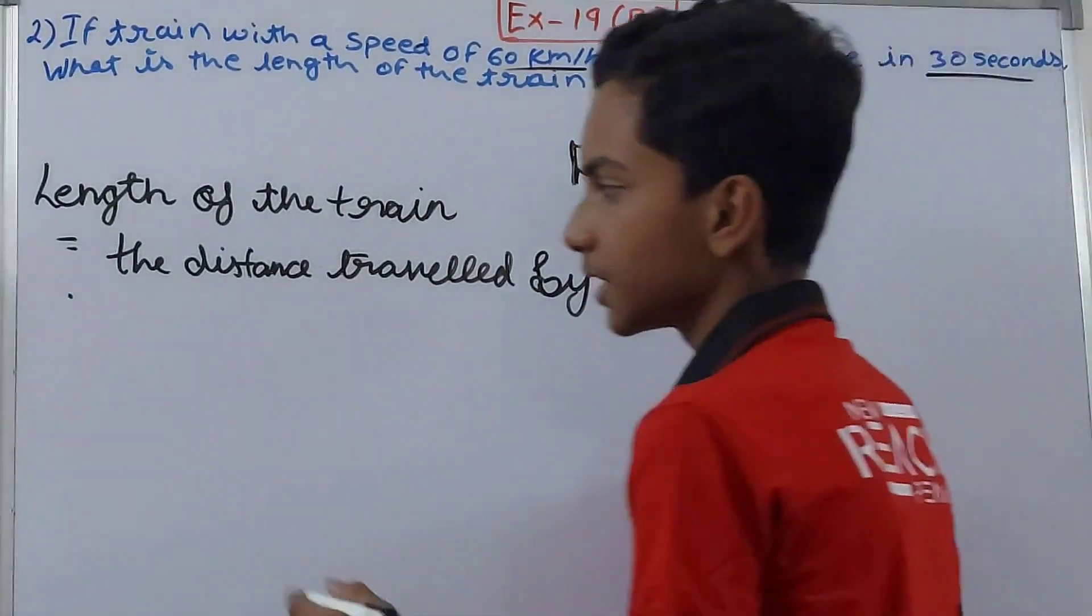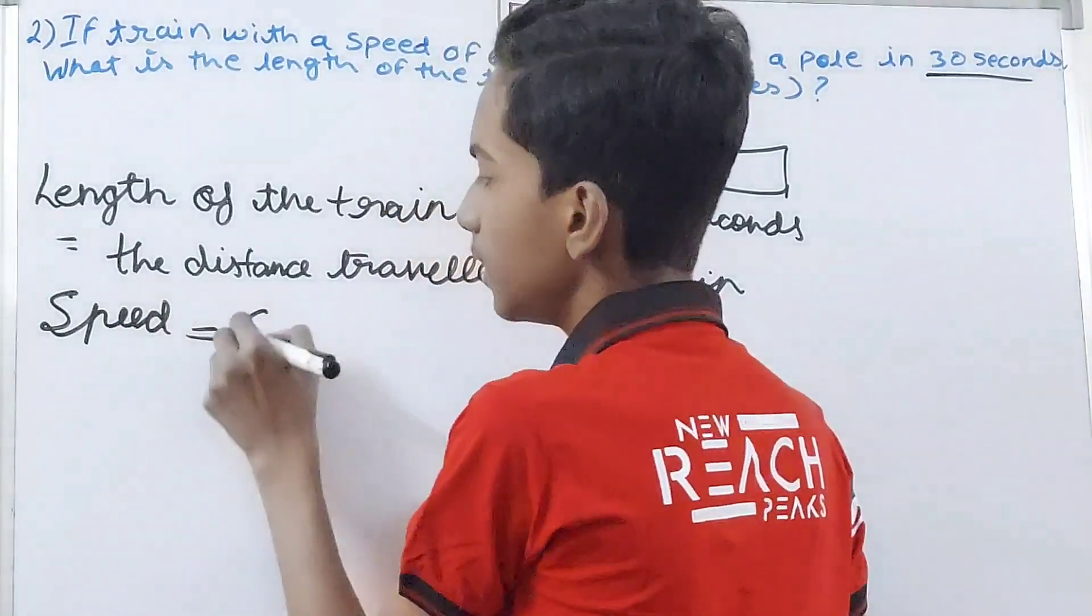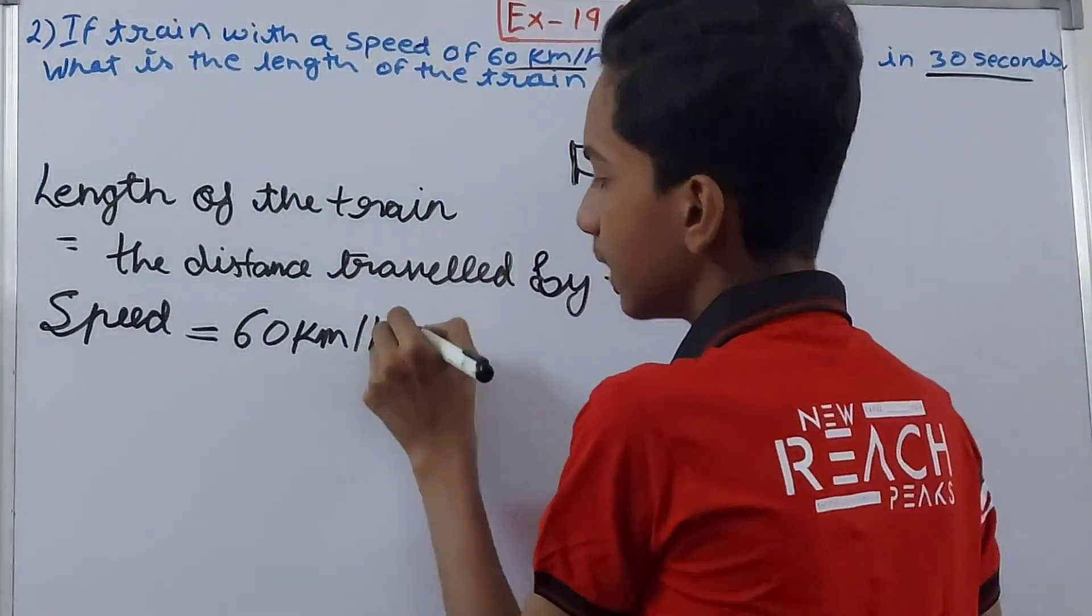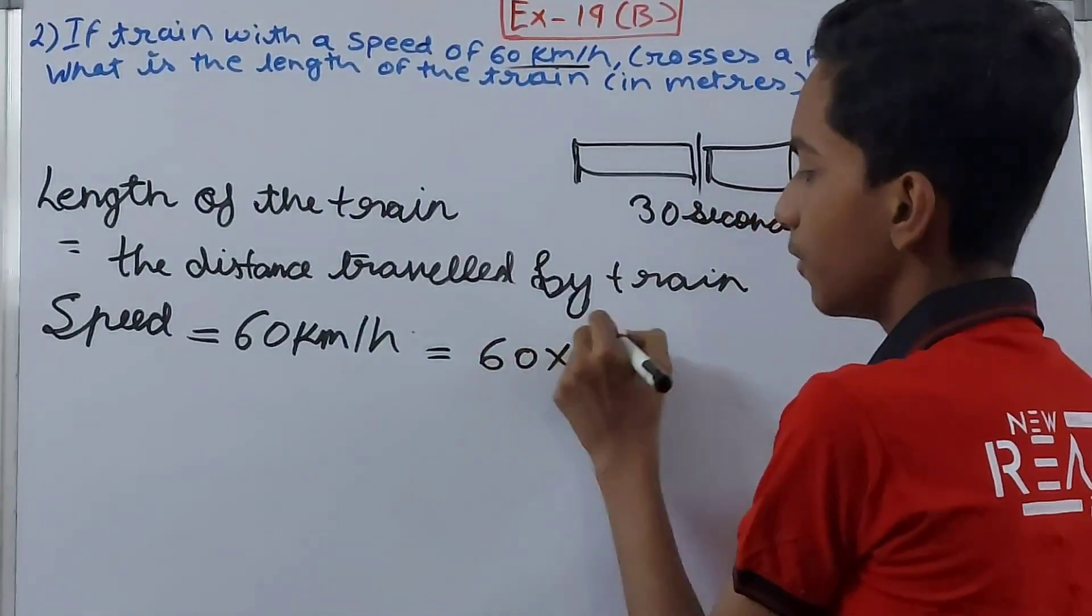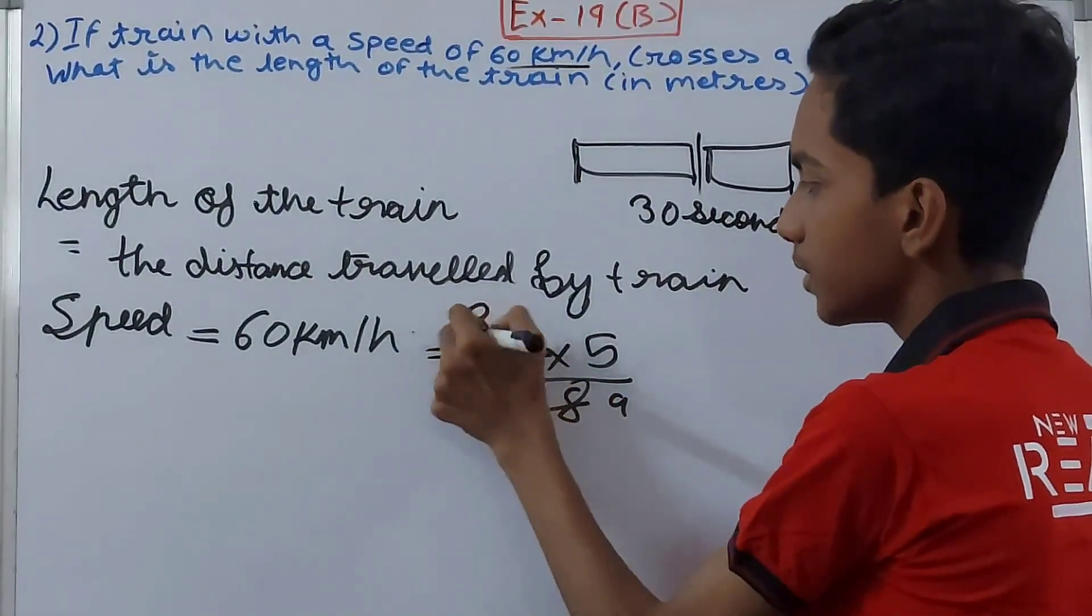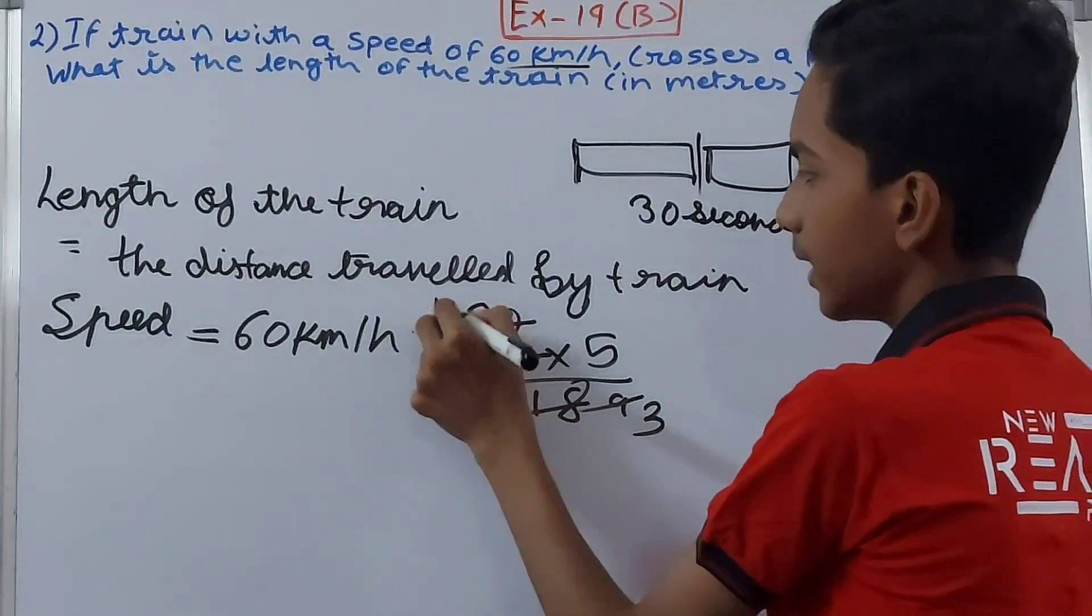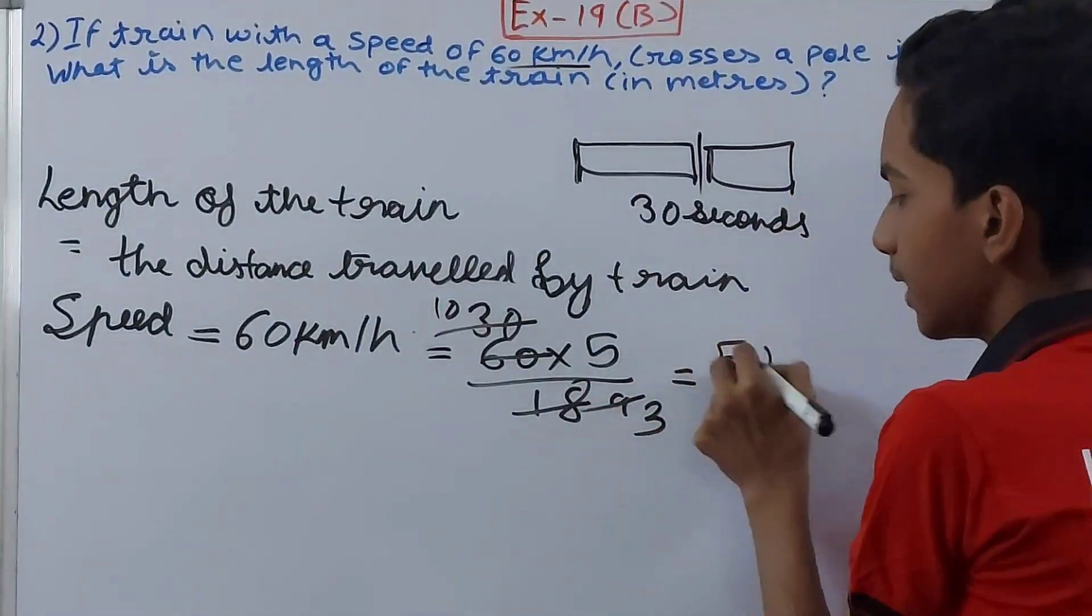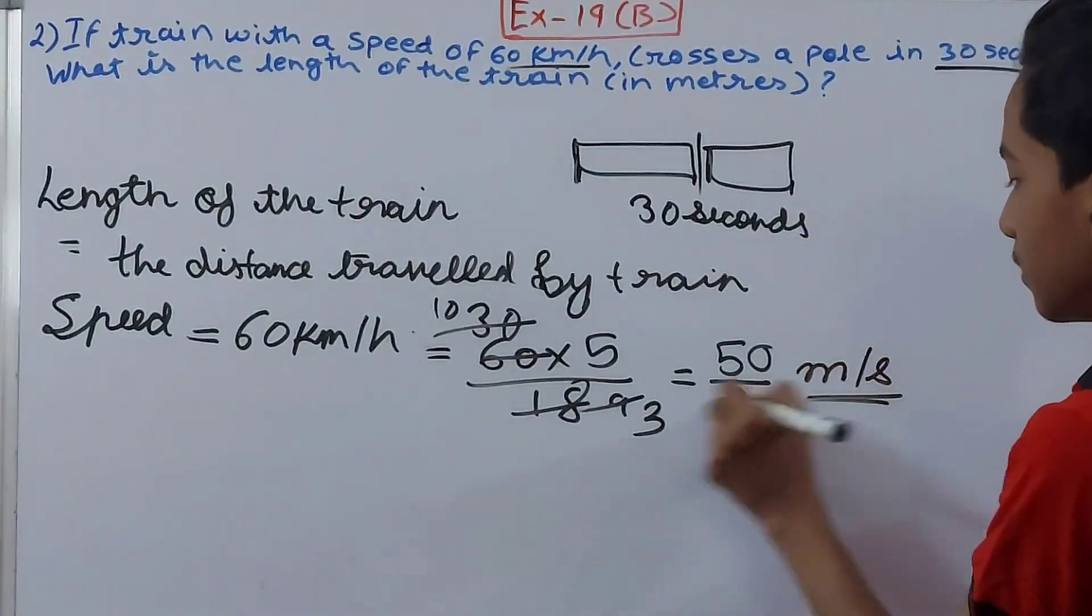So the speed is 60 kilometers per hour and that will be converted to meters per second. So 60 into 5 by 18. This becomes 9, this becomes 30, this will cut it again - 3 and 10. So 50 by 3, and it will be meters per second. So this becomes the speed.